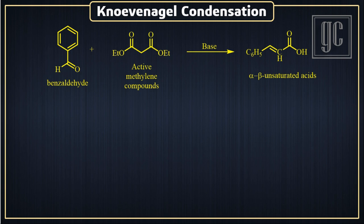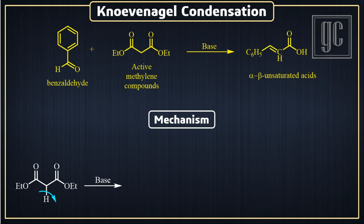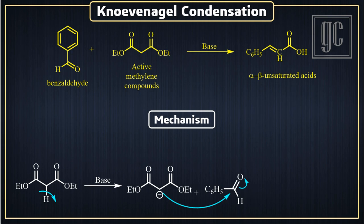Now we are going to discuss the mechanism of this reaction. In the presence of a non-nucleophilic base, one acidic hydrogen is removed from the active methylene molecule; as a result, a carbanion is formed on the active carbon. Now this carbanion attacks the carbonyl carbon of the aldehyde, and as a result the pi electrons of the carbonyl group move to oxygen, and this intermediate is formed.